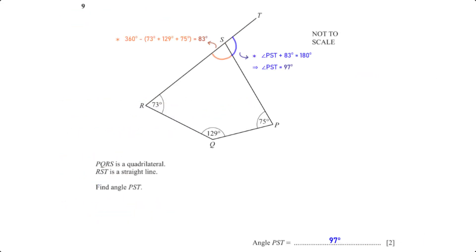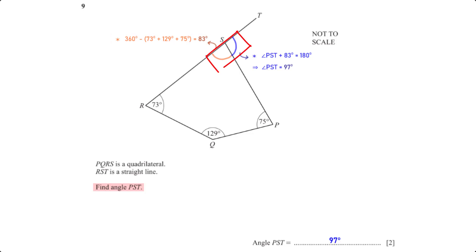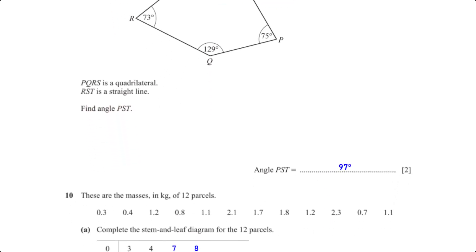PQRS is a quadrilateral and RST is a straight line. Find angle PST. The sum of angles in a quadrilateral adds up to 360 degrees, so to get angle PSR we subtract the sum of 73, 129, and 75 from 360, giving us 83 degrees. Angles on a straight line add up to 180 degrees, so angle PST plus 83 equals 180, giving us angle PST equals 97 degrees.